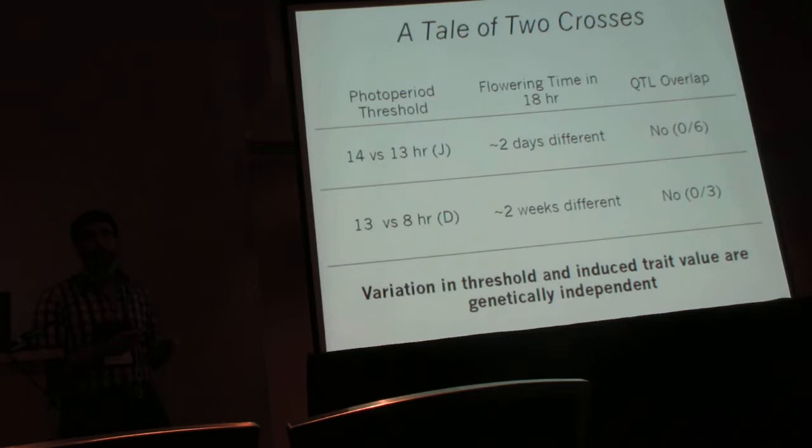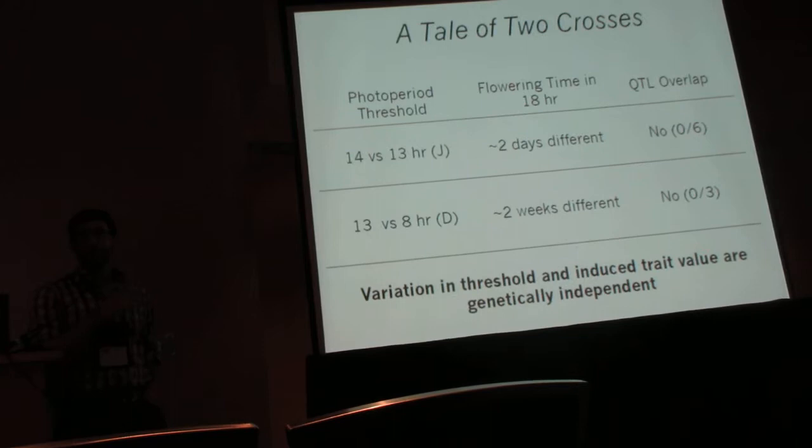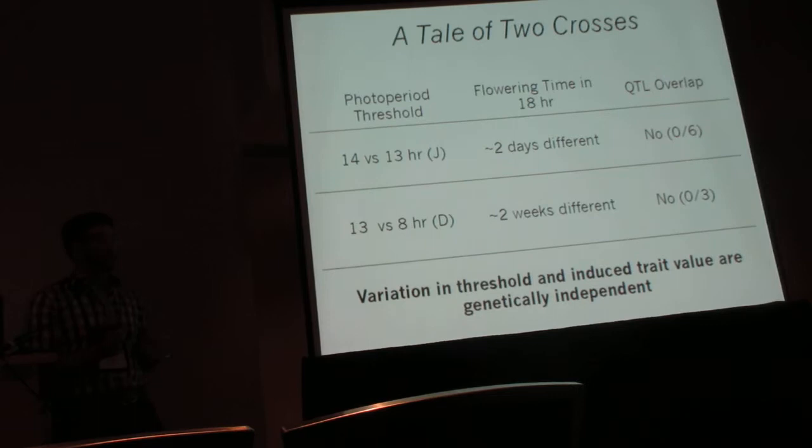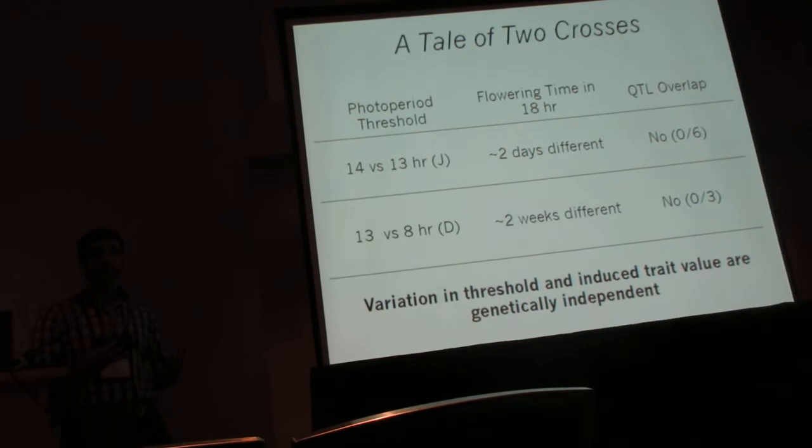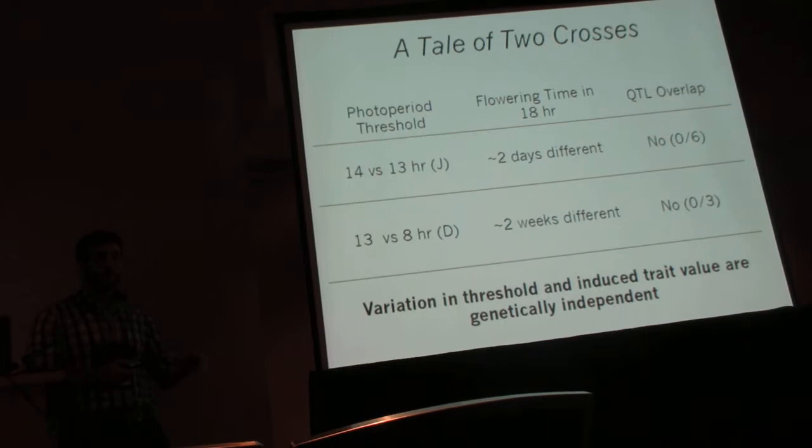This indicates that variation at completely different loci explains divergence in both the critical photoperiod parameter and time to flower under inductive conditions. These are two really independently evolving subcomponents of a seasonal phenology response, meaning there's potential for evolution to act on these differently and really fine-tune the reaction norms.